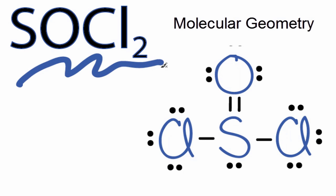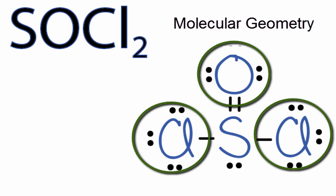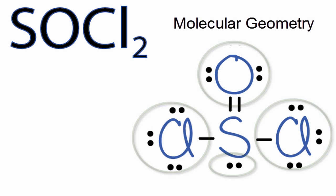So for the SOCl2 molecular geometry, we'll start by looking at the Lewis structure. You can see we have an oxygen atom, two chlorines, and then a lone pair of electrons there bonded to that central sulfur.